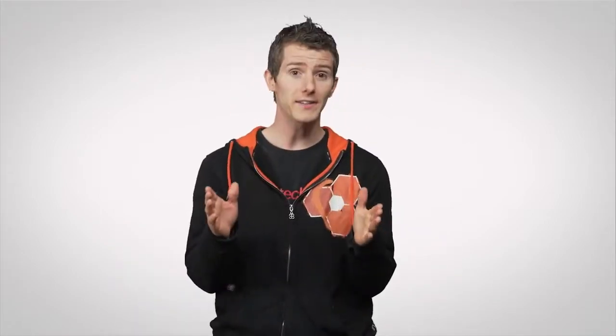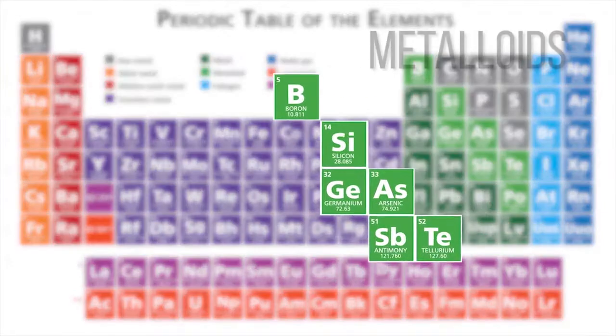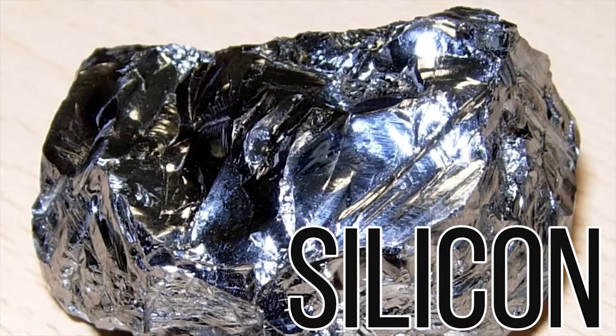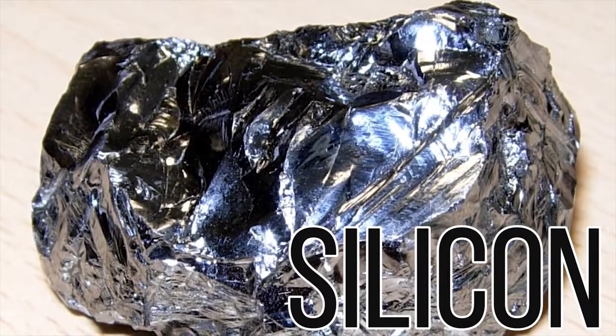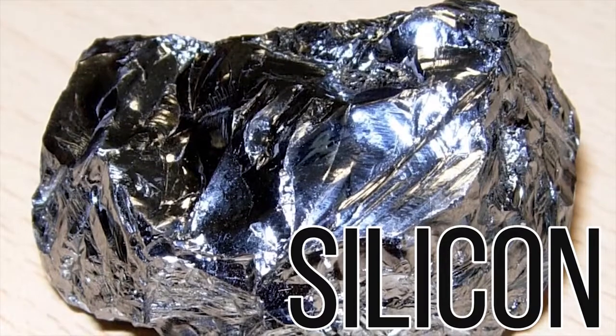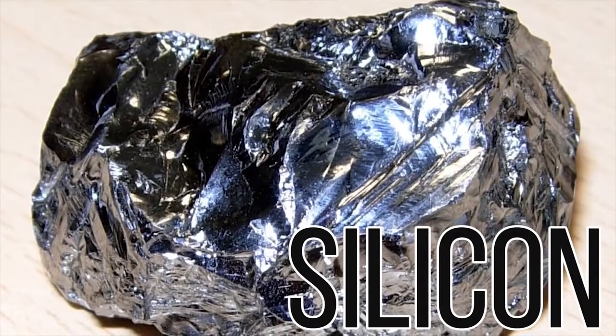Well, silicon has a number of properties that make it unusual among chemical elements. Right now, scientists know of 118 elements, and of those, only six are commonly classified as metalloids, silicon being one of them. These metalloids exhibit metal-like characteristics, but aren't true metals.